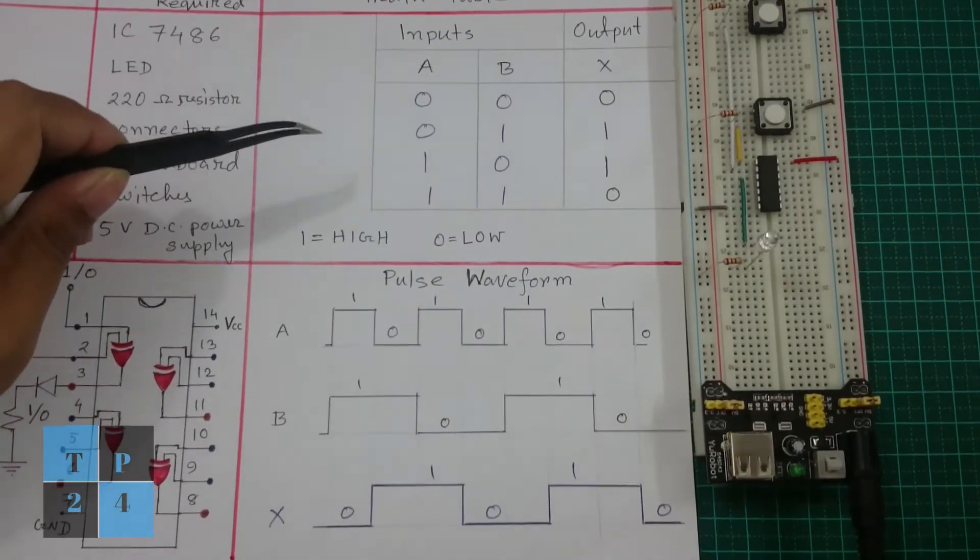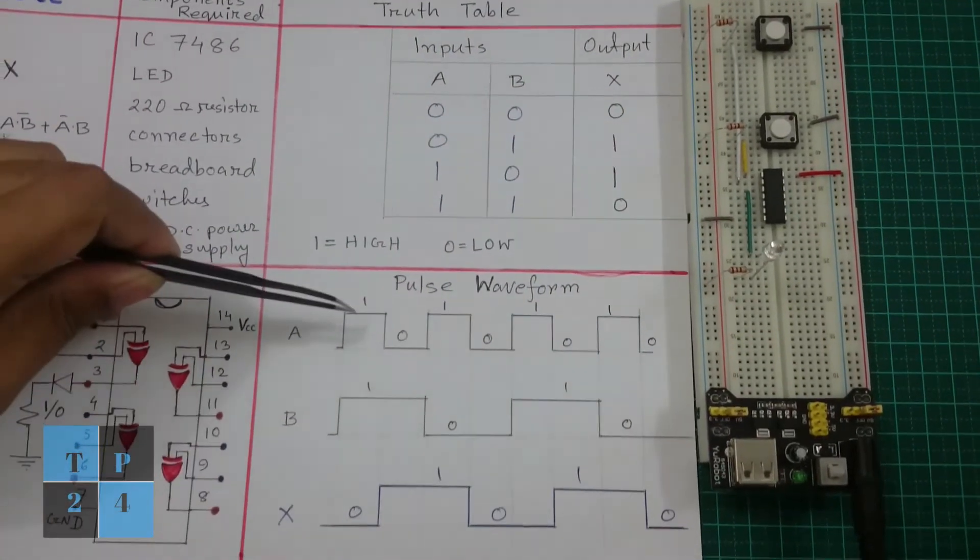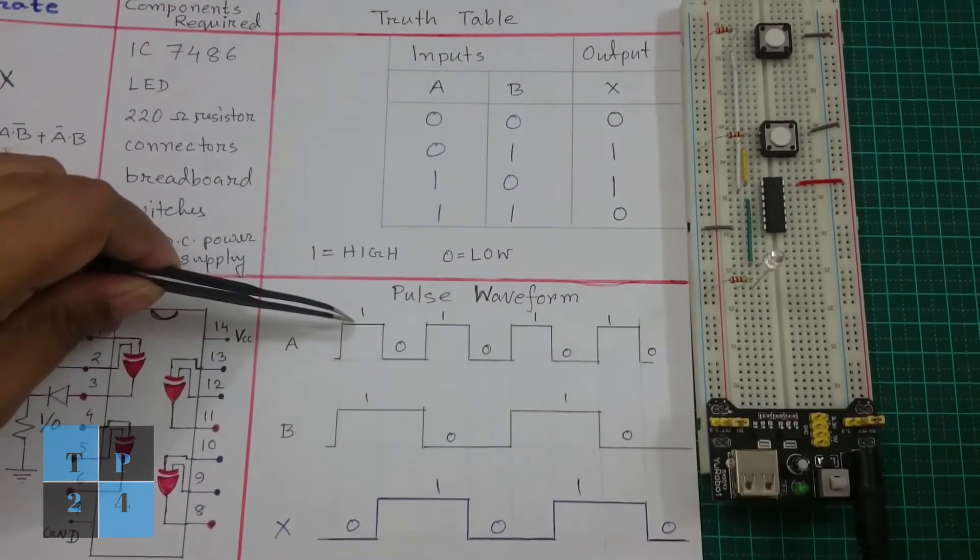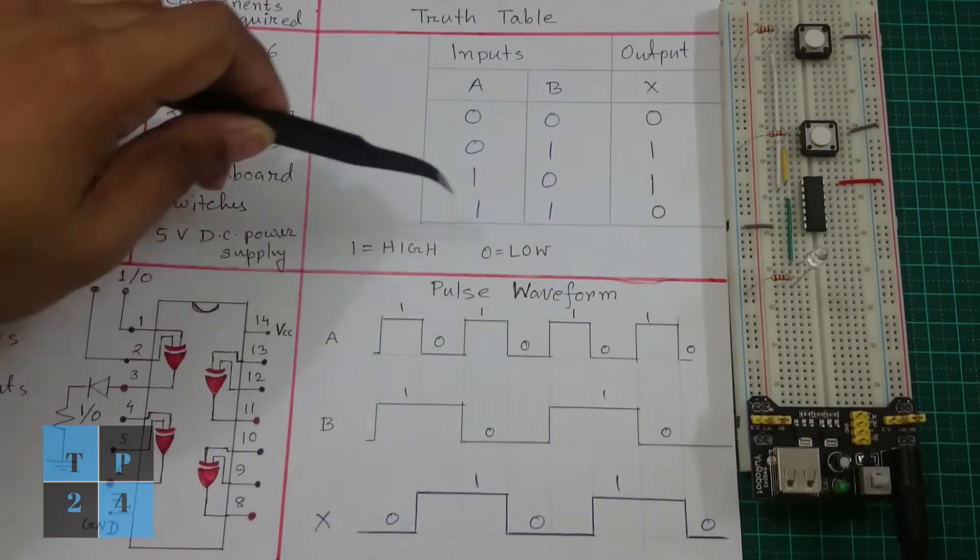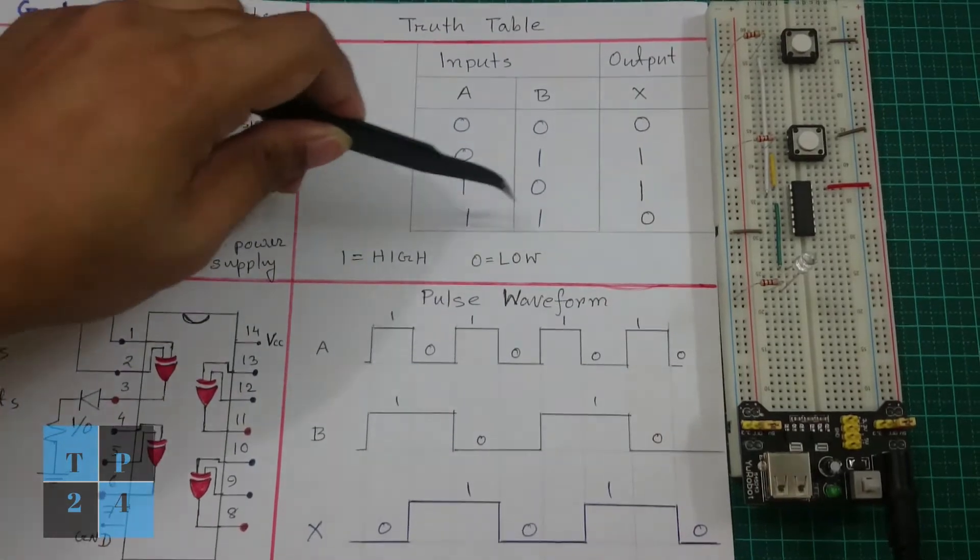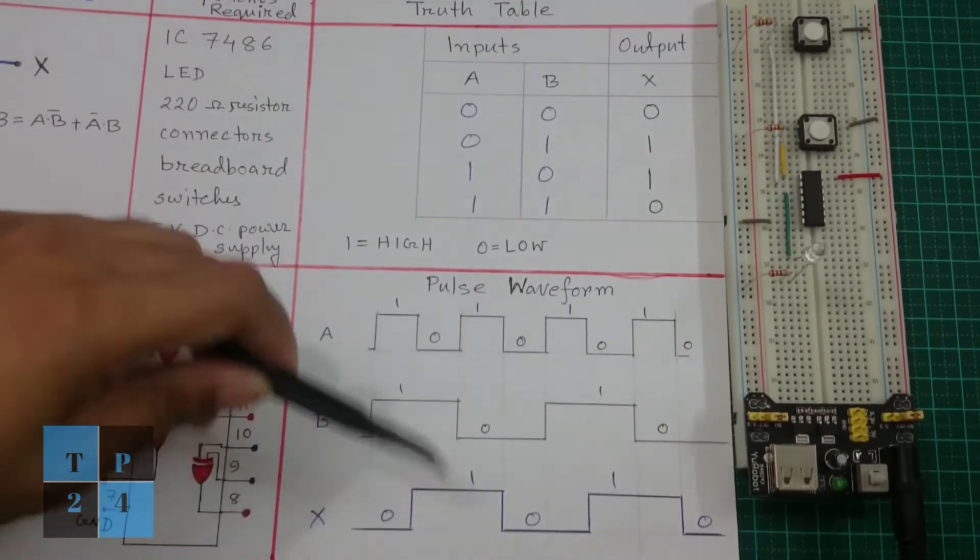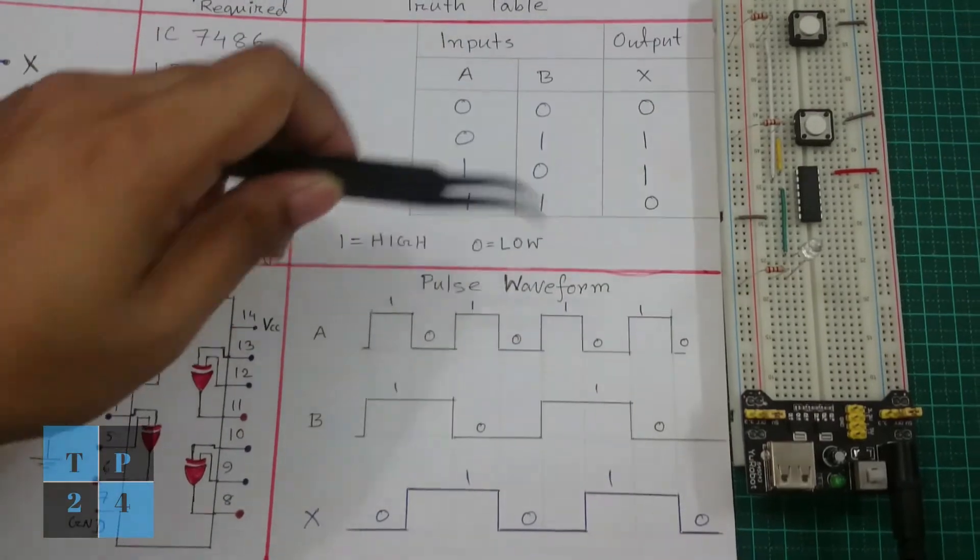And if I let me recheck with the truth table here input A is 1 and input B is 1 so output is 0 which follows the truth table 1, 1, 0. Here 0, 1 is 1 that means 0, 1 is 1.